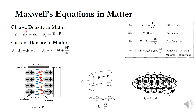The charge density in matter is rho equal to rho F plus rho B. This means the free charge density rho F plus the bound charge density rho B. The polarization produces a temporary charge density called the bound charge, where the bound charge rho B is equal to minus del dot P.